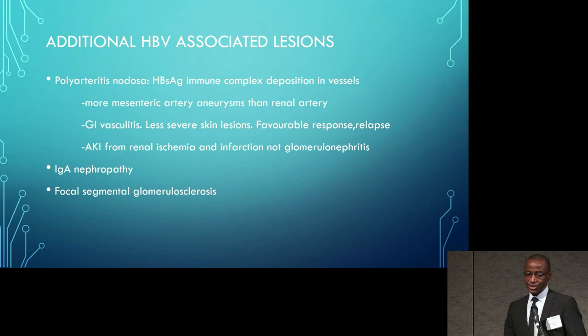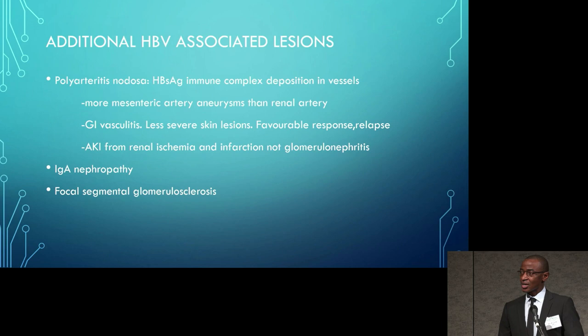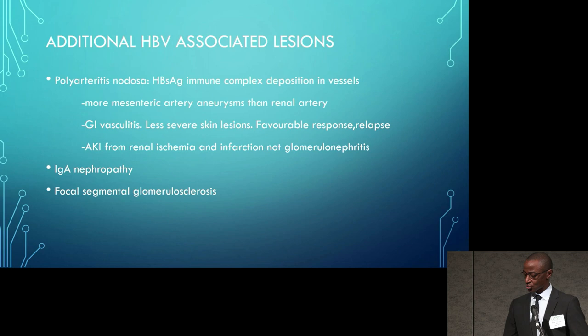Additional hepatitis B-associated lesions include polyarteritis nodosa. These patients tend to be sicker at presentation with significant gastrointestinal involvement, as the mid-size to large arteries involved are primarily mesenteric rather than renal. In patients with hepatitis B and acute kidney injury from polyarteritis nodosa, this is primarily due to renal ischemia and infarction, not glomerulonephritis. Other associated lesions include IgA nephropathy as well as focal and segmental glomerulosclerosis.